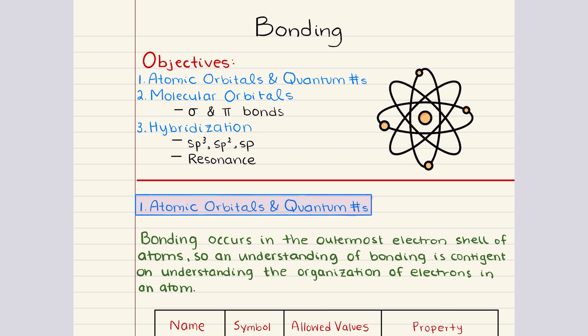Today, we're going to cover Chapter 3 for our MCAT Organic Chemistry Playlist, and this chapter is titled Bonding. In this chapter, we're going to cover the following objectives. First, we're going to discuss atomic orbitals and quantum numbers. We will describe the four quantum numbers, provide ranges of possible values for each quantum number, and then see how to visualize all of this.